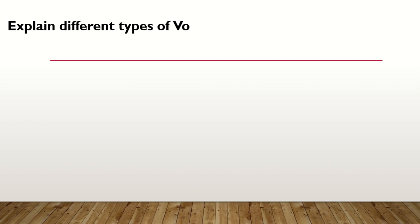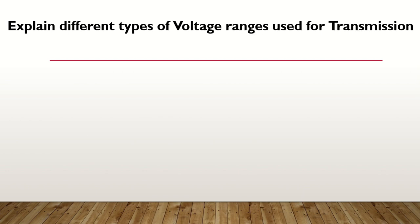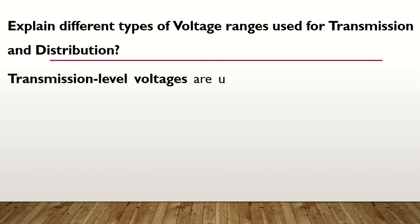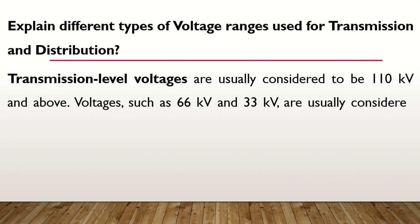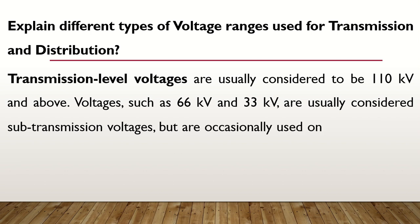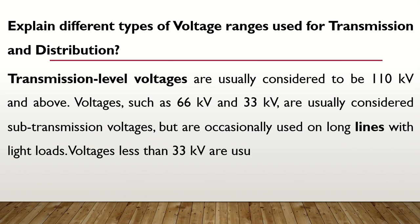Explain the different types of voltage ranges used for transmission and distribution. Transmission-level voltages are usually considered to be 110 kV and above. Voltages such as 66 kV and 33 kV are usually considered sub-transmission voltages, but are occasionally used on long lines with light loads. Voltages less than 33 kV are usually used for distribution.